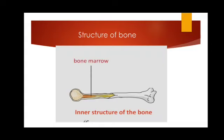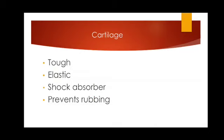There are some elastic substances also present between two bones — that is cartilage. Cartilage is a tough but elastic substance which is usually found between two bones. It acts as a shock absorber and prevents the bones from rubbing against each other, thus wearing them out and causing pain. Cartilage is found at the ends of bones in joints, the tip of the nose, the ear lobes, and so on.